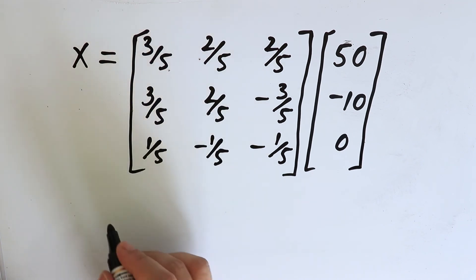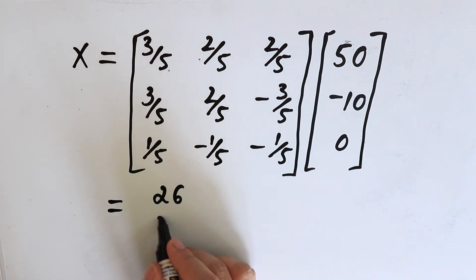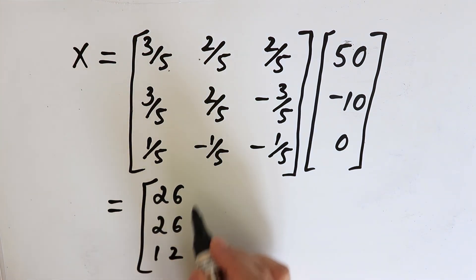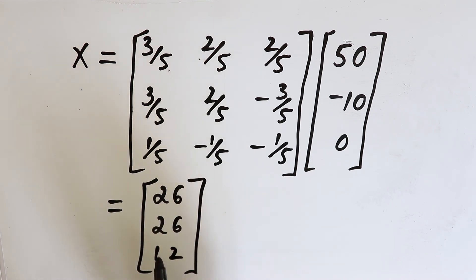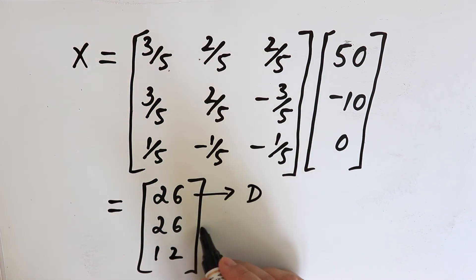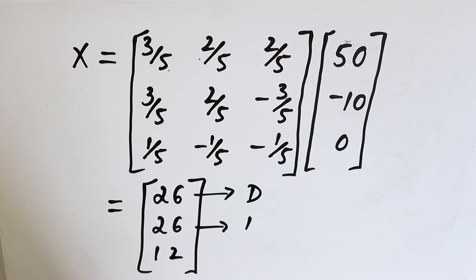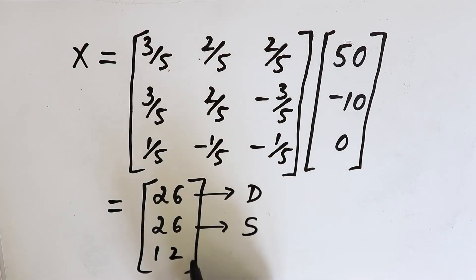You finally end up with the values 26, 26, and 12. Therefore, the equilibrium quantity demanded is equal to the equilibrium quantity supplied, which is 26, and the equilibrium price is 12.